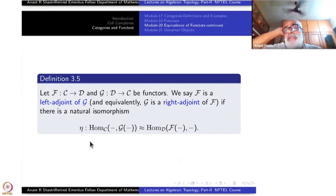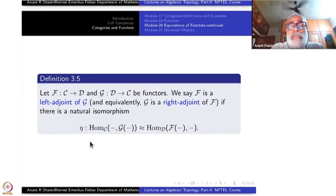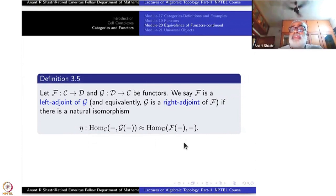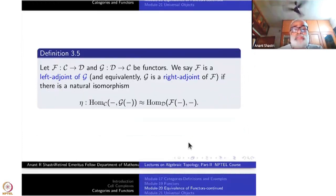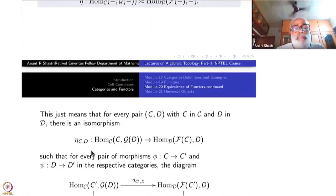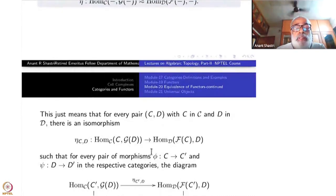When I say natural transformation, there are many other things built in. First of all, a bijection for every C and every D — that itself is a lot of data. But when I say it is a natural isomorphism, for every pair (C, D) with C in C and D in D, there is an isomorphism eta_{C,D} — depending on both C and D — from Hom_C(C, GD) to Hom_D(FC, D). G is on the right side, F is on the left side.